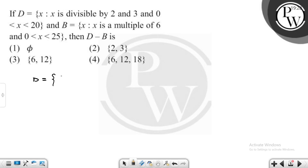For values divisible by both 2 and 6 from 0 to 20, x can be 6, 12, and 18. For multiples of 6, we have 6, 12, 18, and 24.